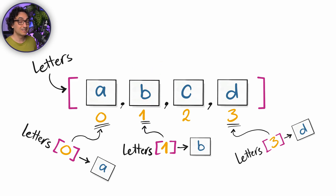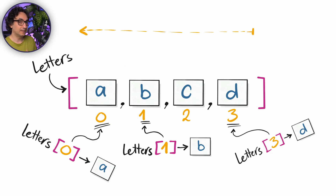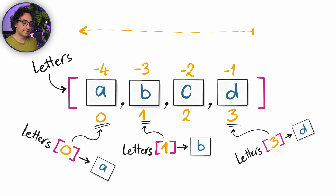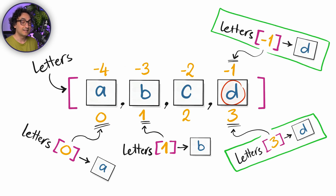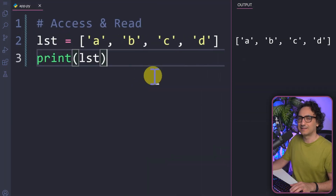In Python we can also go backwards using negative numbers. Counting from the right side to the left, the last item has position minus one, then minus two, minus three. This is really useful when you have a long list and are only interested in the last items. Using index minus one gives you d — the same result as using index three. So you get exactly what you need with either approach.